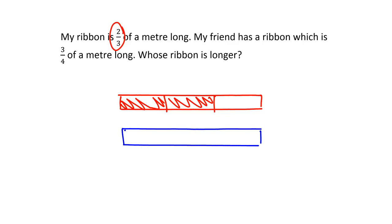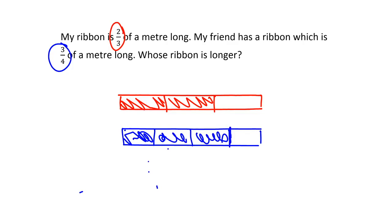What happens with my friend? For my friend, she needs three-quarters of a meter. So I've got to take this meter-long piece of ribbon and cut it up into four pieces to get quarters — four equal pieces. And then I need to take three-quarters: one, two, three quarters. I can see my friend's ribbon goes all the way to there, whereas my ribbon only goes to there. So it's quite clear that it is my friend who has the longer ribbon.